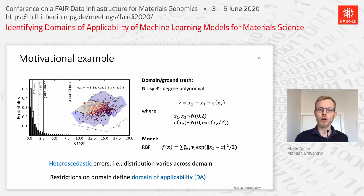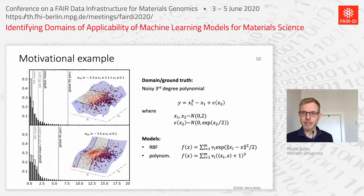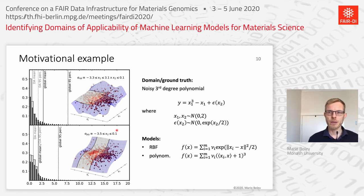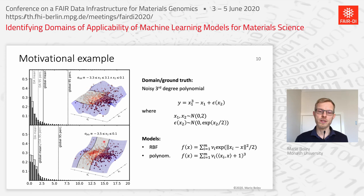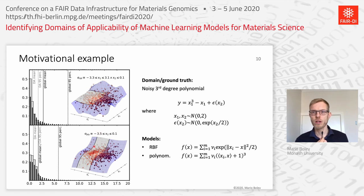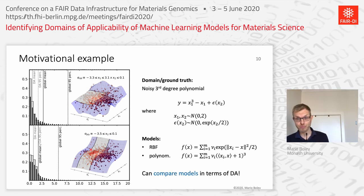Once I know the domain of applicability, I can use the model only to predict target properties inside that DA. With a second model — here a polynomial model — I can also compute its domain of applicability and use the two DAs to compare relative strengths and weaknesses. For the polynomial model, I don't need to restrict x1 because the global basis function allows extrapolation into the sparse data regime. But as a downside, errors in the high-noise regime also influence predictions in the low-noise regime, so the DA now has a lower bound on x2.